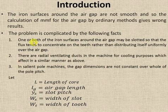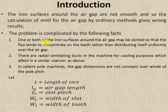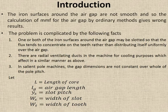The first fact is slotting. One or both of the iron surfaces around the air gap may be slotted — that is, both stator and rotor surfaces will be slotted. Due to the slotting, the magnetic flux has a tendency to concentrate on the tooth rather than distributing itself uniformly over the air gap.